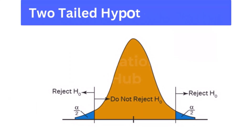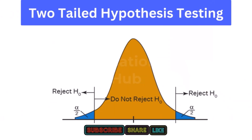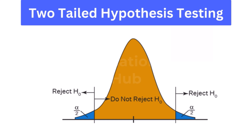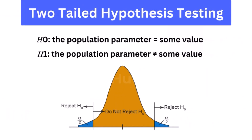Two-tailed hypothesis testing: In this hypothesis testing method, the critical region lies on both sides of the sampling distribution. It is also known as a non-directional hypothesis testing method. The two-tailed test is used when it needs to be determined if the population parameter is assumed to be different than some value. The hypotheses can be set up as: H0 — the population parameter equals some value; H1 — the population parameter is not equal to some value. The null hypothesis is rejected if the test statistic has a value that is not equal to the critical value.